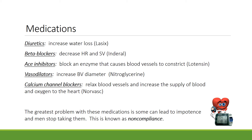Diuretics increase water loss — an example is Lasix. Beta blockers decrease heart rate and stroke volume — an example is Inderal. ACE inhibitors block an enzyme that causes blood vessels to constrict — an example is Lotensin. Vasodilators increase blood vessel diameter — nitroglycerin is an example; by increasing blood vessel diameter you drop blood pressure. Calcium channel blockers relax blood vessels and increase the supply of blood and oxygen to the heart — Norvasc is an example. The problem with most of these medications is that some can lead to impotence, and men stop taking them — this is known as non-compliance.